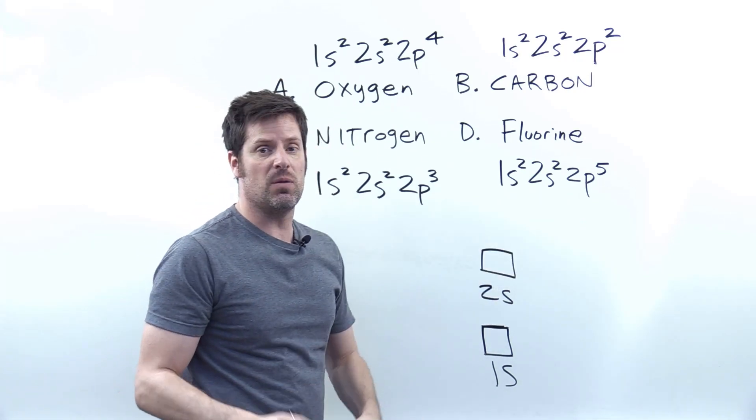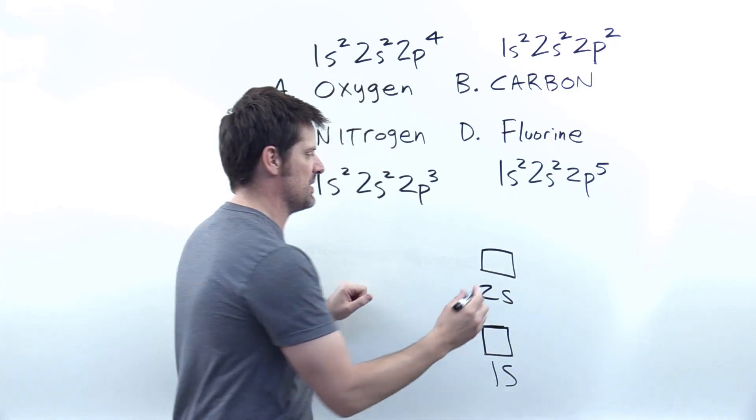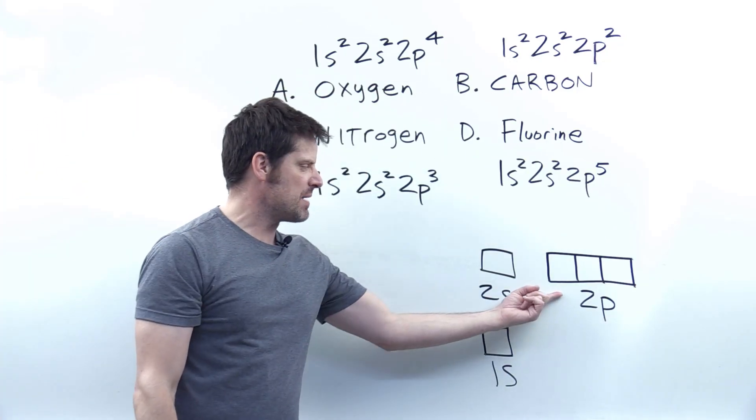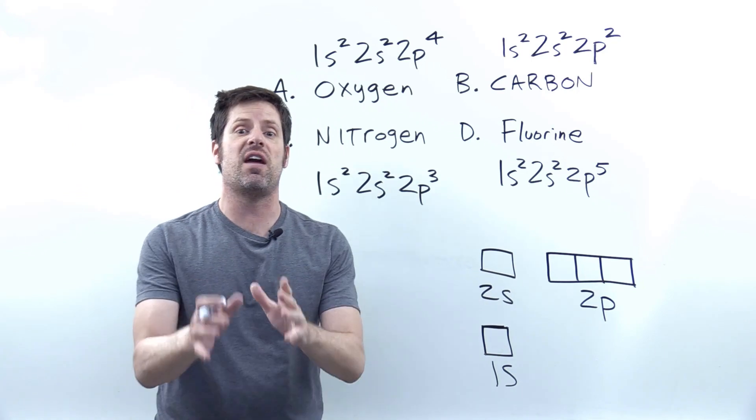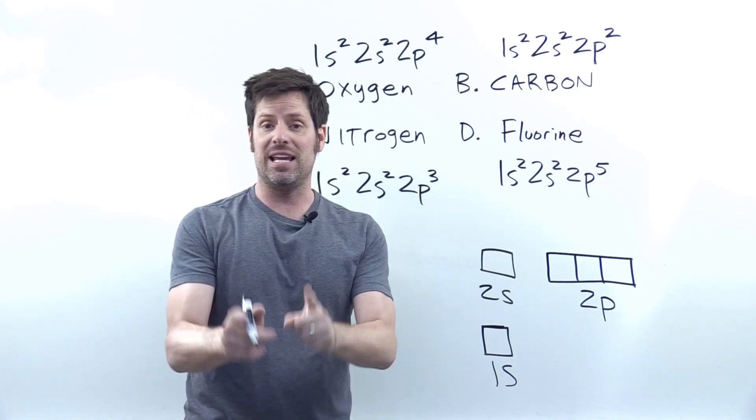Now, for the 2p orbitals over here, as we just saw, that's going to be three boxes, which I'll lay down at roughly the same vertical location as the 2s, because they have the same principal quantum number n equals two.